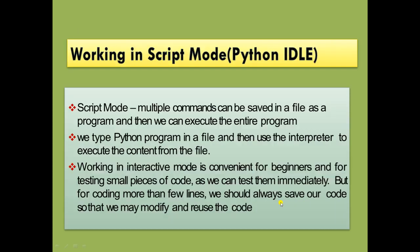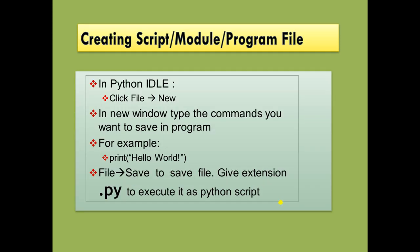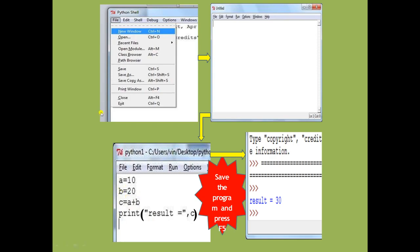In script mode, you write multiple commands and save the complete file. The file is saved with the extension .py. To create a script in Python IDLE, click File, then New Window. Type your commands in the new window, save the file — it will automatically save with the .py extension even if you forget to add it.